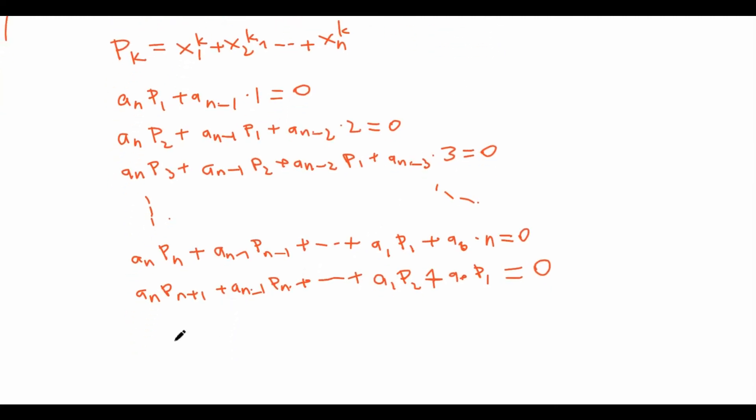So of course, the next one would be a_n*P_{n+2} plus dot dot dot plus a_1*P_3 plus a_0*P_2 equals 0, and then so on. The pattern goes on like this with each sum having a total of n+1 terms.